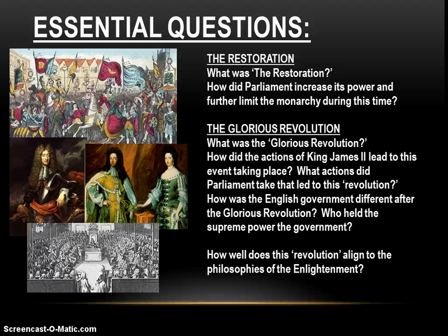Then we get into the Glorious Revolution. What the heck is that? How can a revolution be glorious? Well, we'll find out. How do the actions of King James II lead to this event taking place? And what does Parliament do that leads to this, quote-unquote, revolution? After it's over, how is the English government different than it was before the Glorious Revolution? How has the power structure shifted? How has the balance of power in the English government changed? And be thinking about the big question: how well does this event align to the philosophies of the Enlightenment? How well does this adhere to the ideas of classical liberalism? That's the big theme.